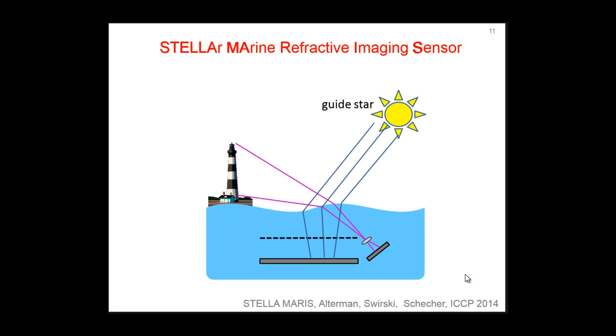So, our system is stellar marine refractive imaging sensor and we call it Stellar Maris, which is Latin for star of the sea. It comprises a Shack-Hartmann sensor and a viewing part. This is the viewing part of the system and this is the wave sensor. Now, let us concentrate on the wave sensor.